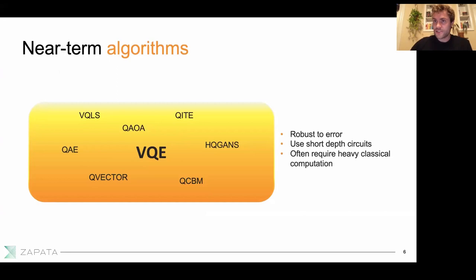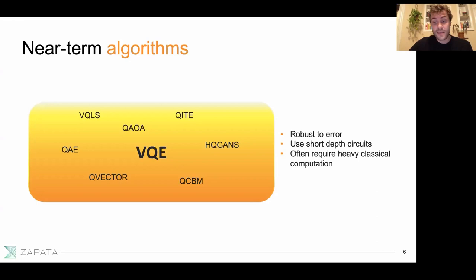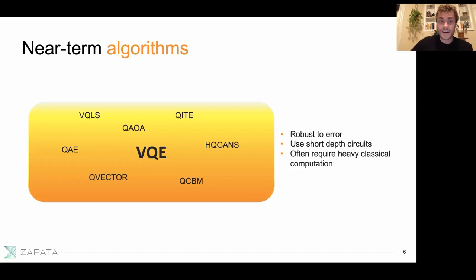Over the last almost decade, there has been a new thread in the field of quantum algorithms where people have been designing quantum algorithms which cater to the limitations of noisy devices. We refer to these as near-term algorithms — you probably recognize some of the acronyms. These algorithms cater to noisy devices because they are often robust to error, use short-depth quantum circuits, and often offload much of the computation onto a classical computer. Thinking back to the quantum advantage machine, we can ask: do any of these near-term algorithms show promise towards realizing quantum advantage?